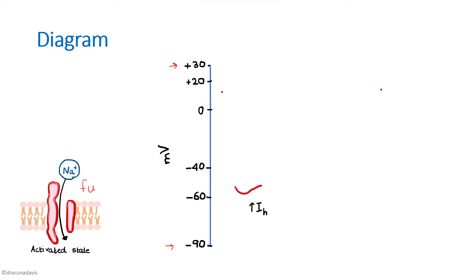These are called funny channels because, unlike most channels that open during depolarization, these hyperpolarization-gated channels open when the voltage is low. Through these funny channels, sodium enters, causing a slight rise in potential. These channels are depicted as H channels, and we label this phase as increased H channel permeability or increased H channel current.